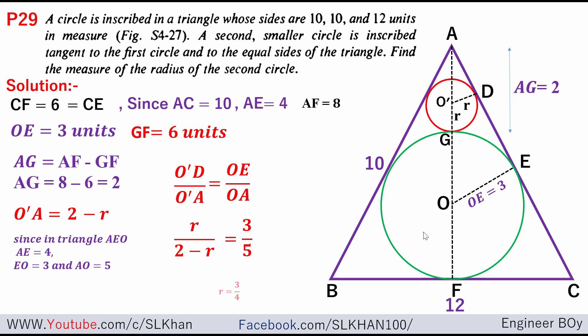Or you can say the radius of the smaller circle, which is going to be 3 by 4 units. And that's it. This is how we can give solution to the same problem.